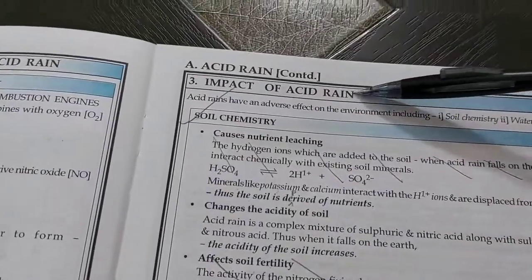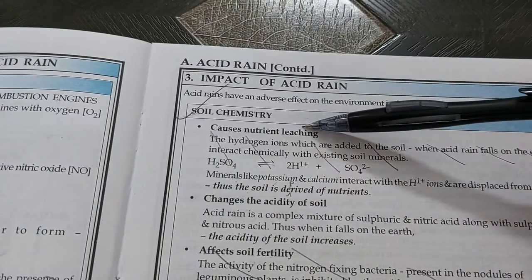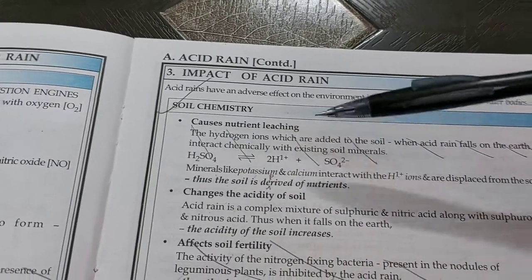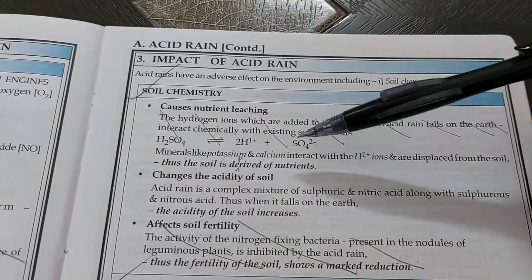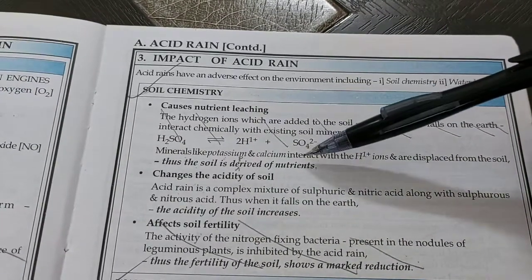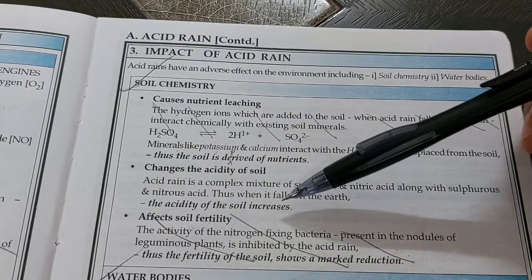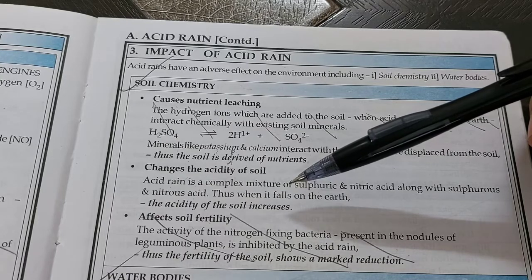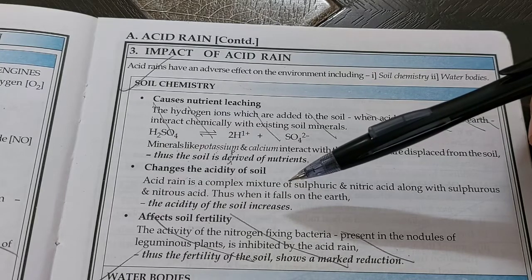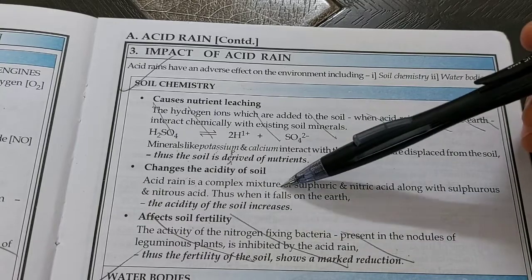What is the impact of acid rain? First, soil chemistry. It causes nutrient leaching — all the nutrients are lost because acids will react with salts of sodium and calcium and convert them into a form which is not useful. The acidity will increase and that may impact life in the soil because the crops we grow and the insects which live in the soil are adapted to a particular pH. If the pH decreases and it becomes more acidic, they may not be able to survive.